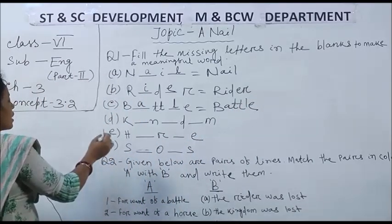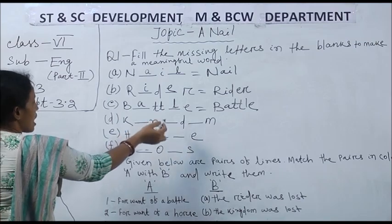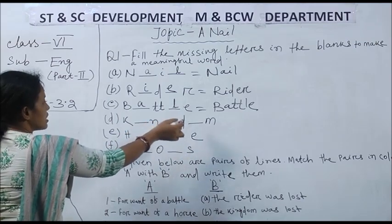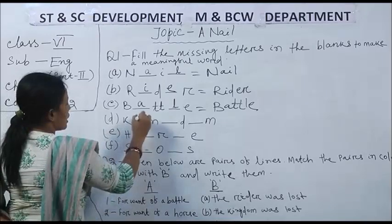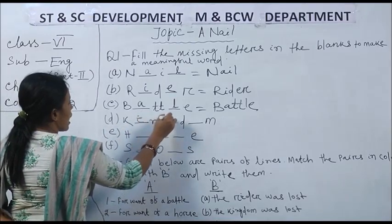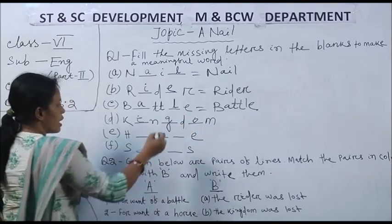Now K dash N dash D dash M. What will be the word? K I N G D O M. The word is kingdom.